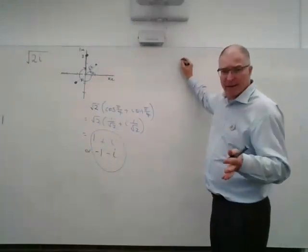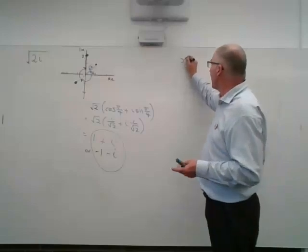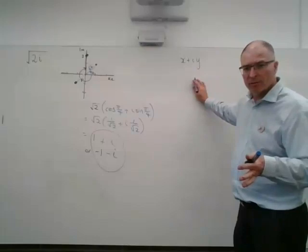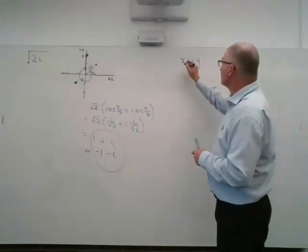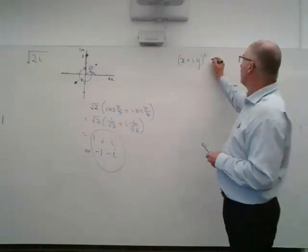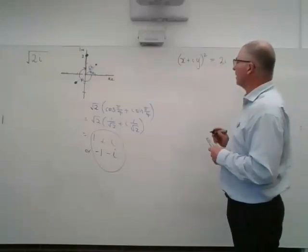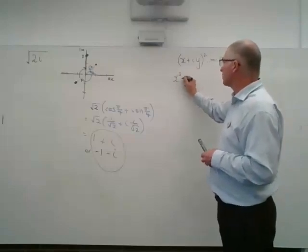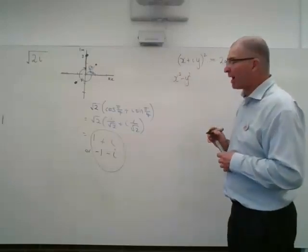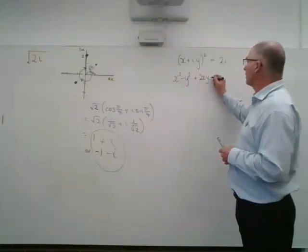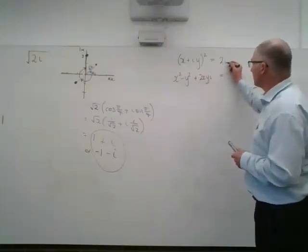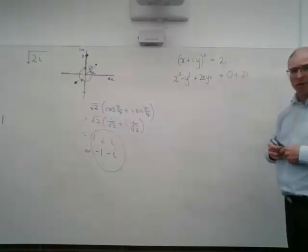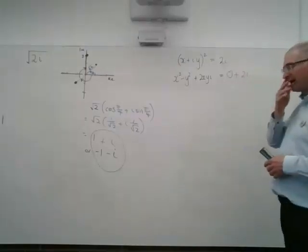I want to find some complex number, x plus iy, which is the square root of 2i. So that means if I square that, I will end up with my 2i. Now, we've expanded these enough before to know that that's x squared minus y squared for the real part, and 2xy i for the imaginary part. And 2i is just 0 plus 2i. There's no real part. 2i is the imaginary part there.